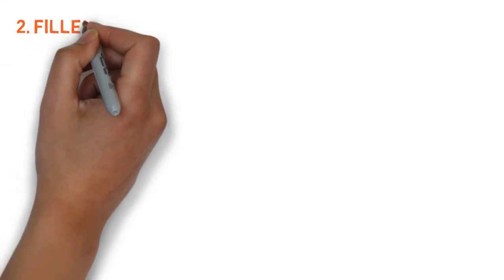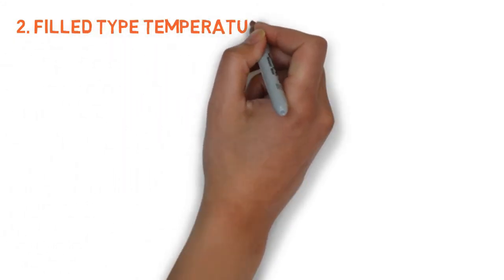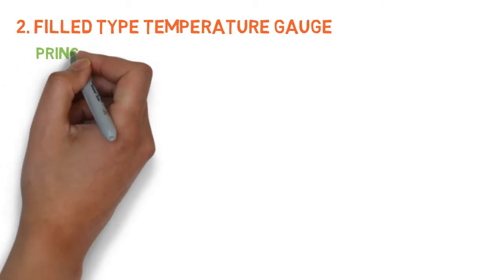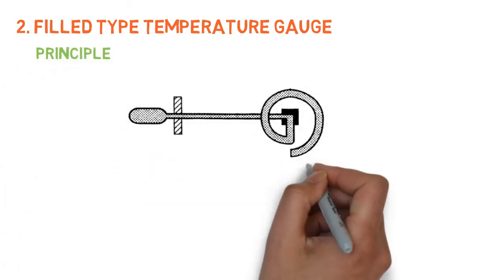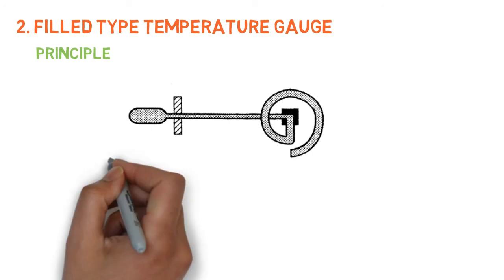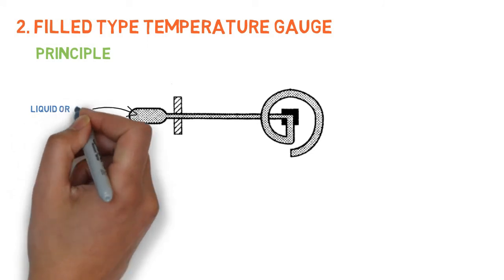Now we'll see about filled type temperature gauge in detail. The sensing element consists of a stainless steel bulb containing a liquid or gas.